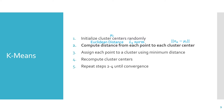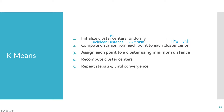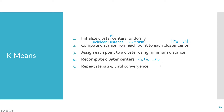We compute the distance from each point to each cluster center using Euclidean distance, also known as the L2 norm. So for every point in the training data, we compare it to every cluster center. Then we assign each point to a cluster using minimum distance, recompute our cluster centers by taking the mean of each cluster, and repeat these steps.